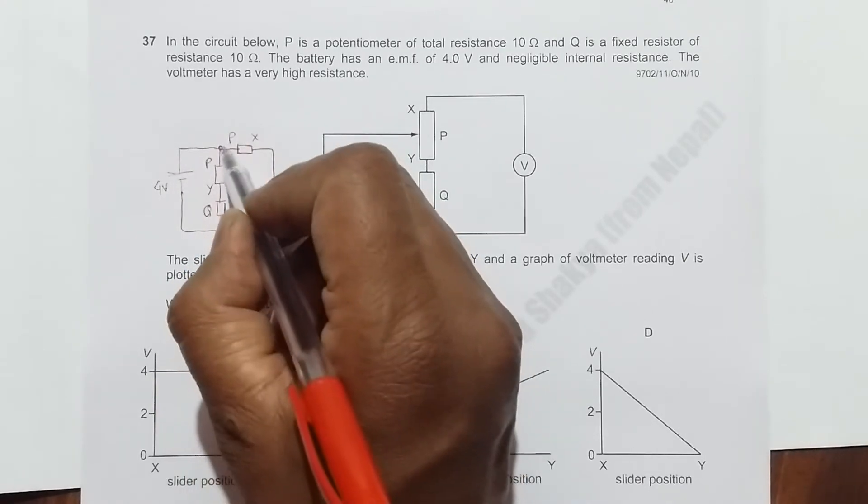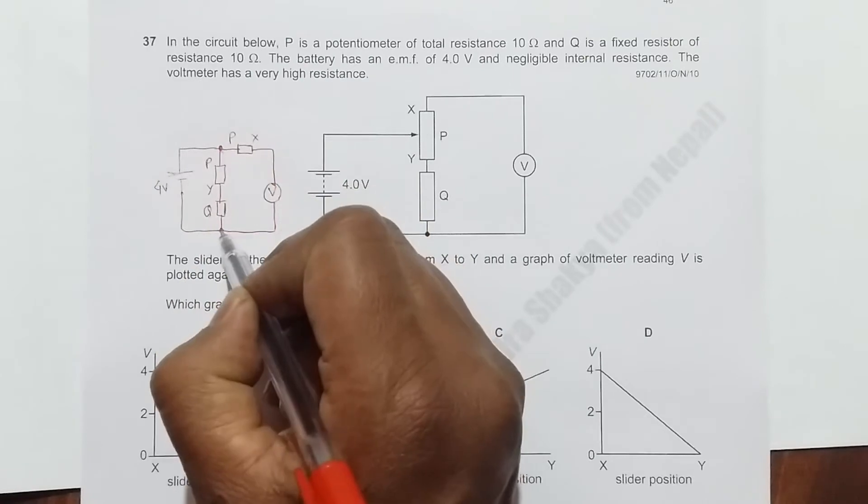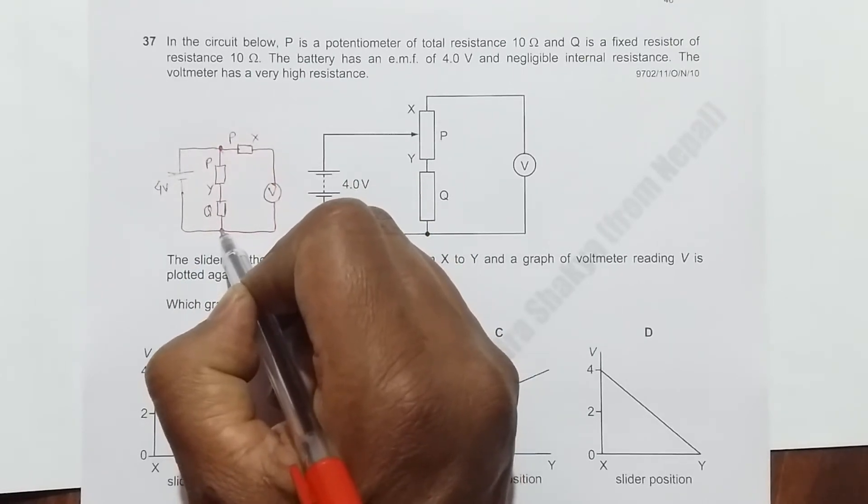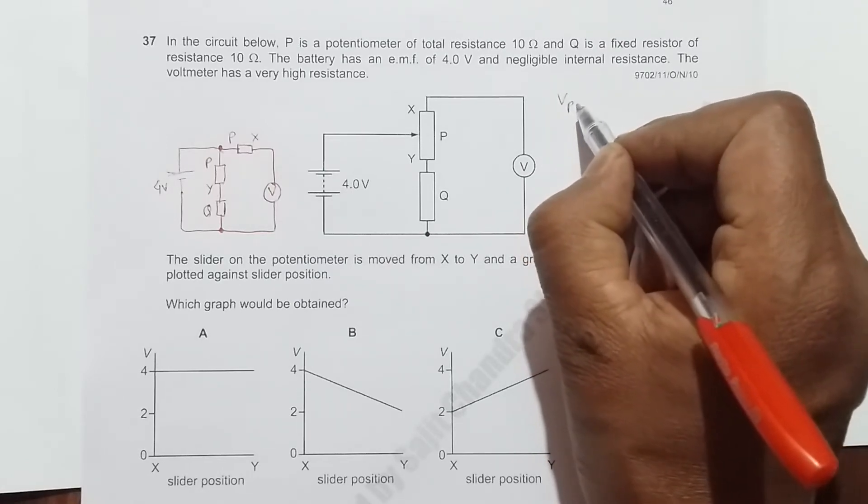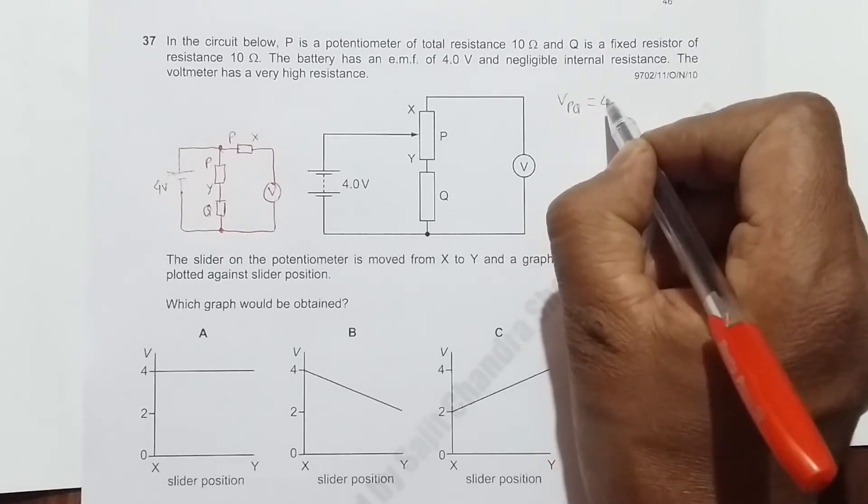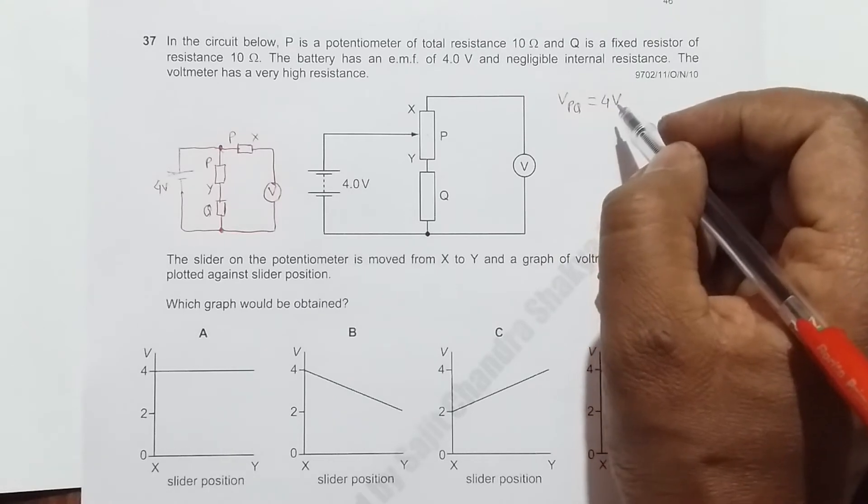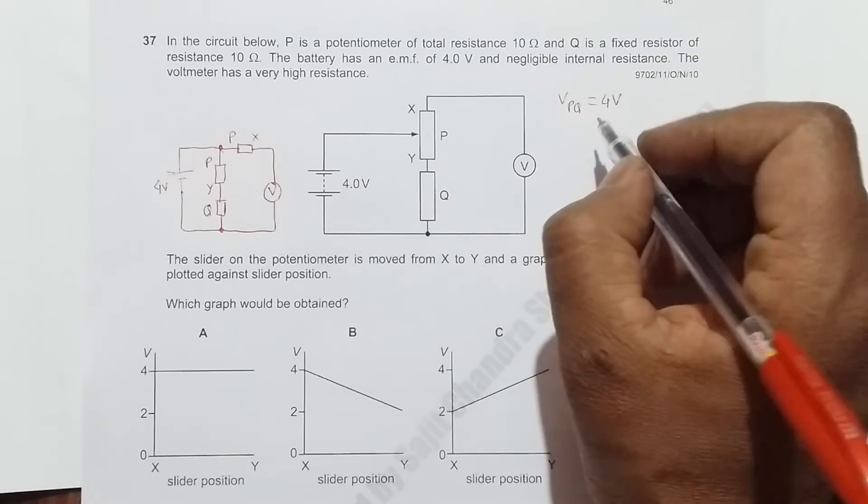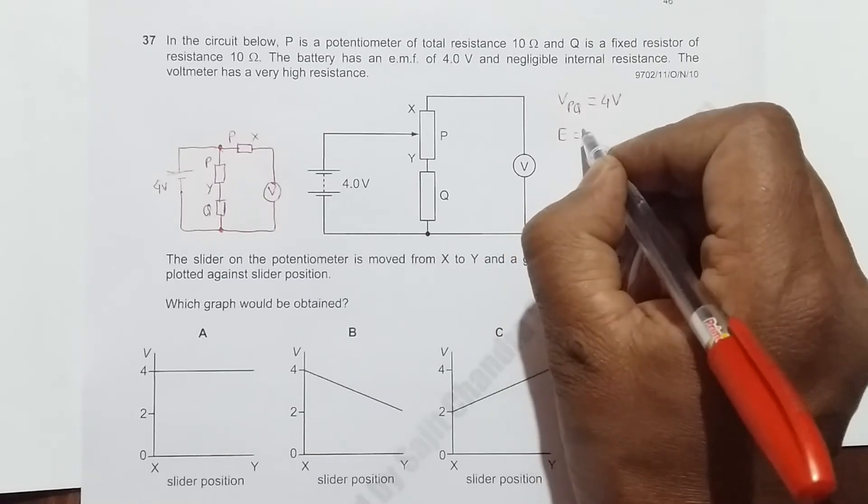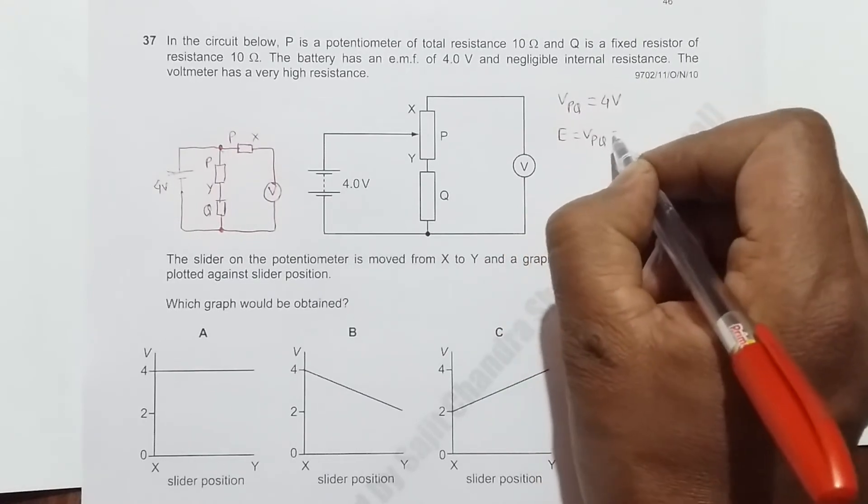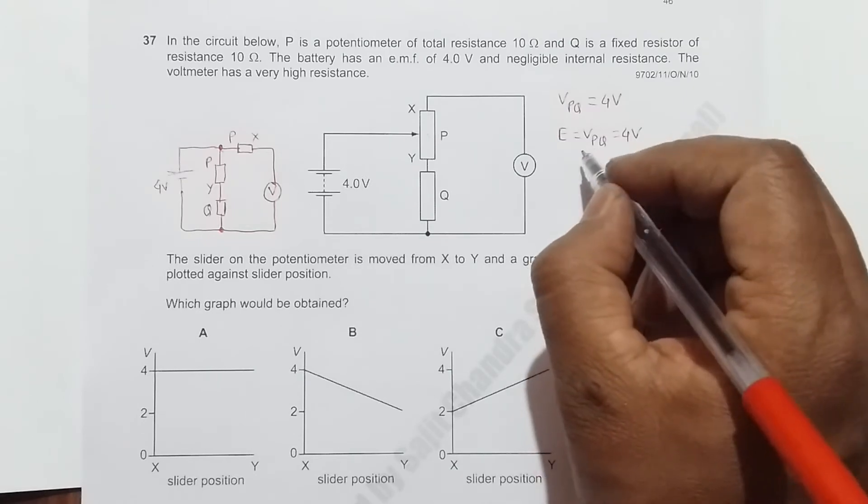The voltage between these two points is also 4 volts, so I can write V_PQ equals 4 volts. Now if I use the potential divider formula, E or V_PQ equals 4 volts.